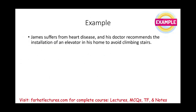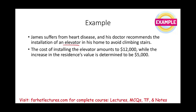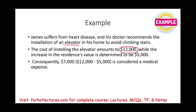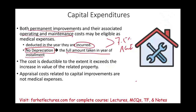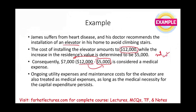James suffered from heart disease and his doctor recommended an elevator to avoid climbing stairs. The installation cost $12,000. You deduct the cost minus any increase in fair value — if the home's value increased by $5,000, the net deductible cost is $7,000. Ongoing utilities and maintenance for the elevator are also treated as medical expenses as long as the medical necessity persists.